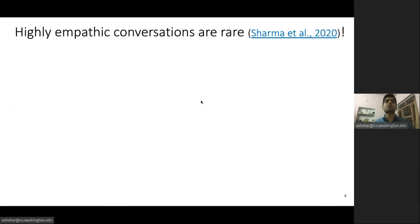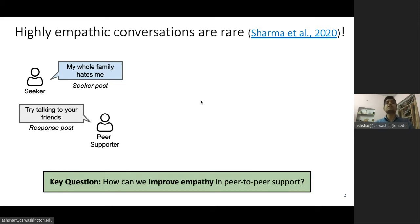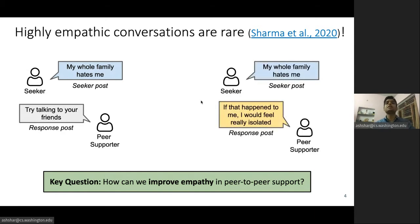However, recent work has shown that highly empathic conversations are rare on peer support platforms. On these platforms, suggesting actions like 'try talking to your friends' is much more common, but it is not an effective way of providing support. So the key question is, how can we improve empathy in peer to peer support? And how can we turn these low empathy conversations into higher empathy conversations?